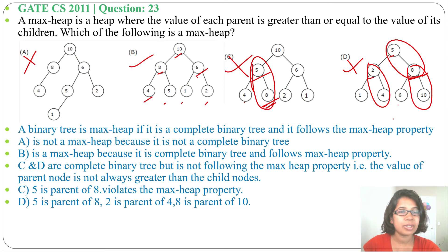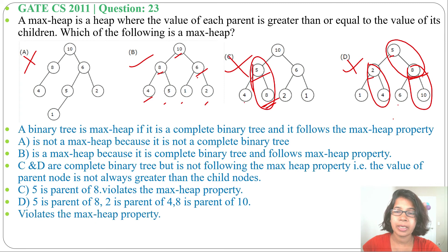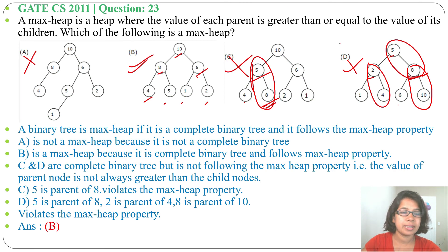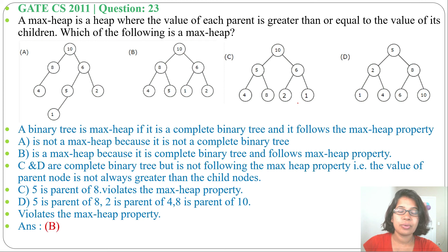Options A, C, and D are not max-heaps, while option B is a max-heap. Option A doesn't satisfy the shape property; options C and D don't satisfy the parental dominance property. Only option B satisfies both properties, so the answer is option B. If this lecture was helpful, please like and subscribe. Thank you.